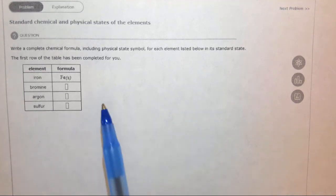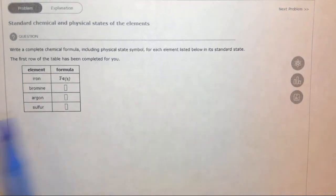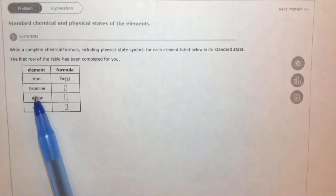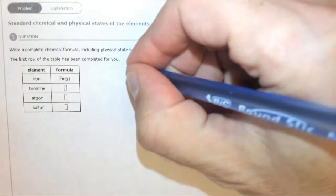In this question we're asked to find the standard states of some elements, and the first one is bromine. It turns out that bromine is one of the diatomic elements. There are seven.